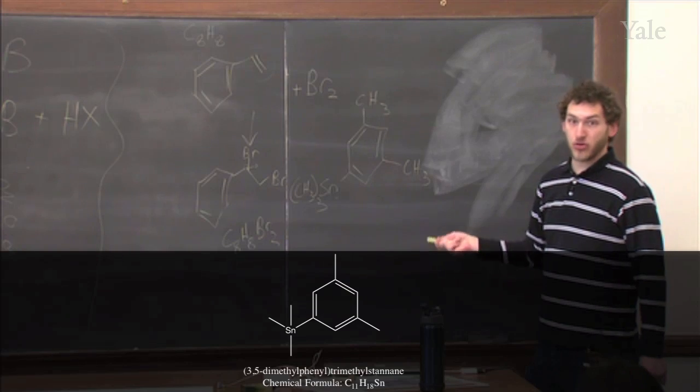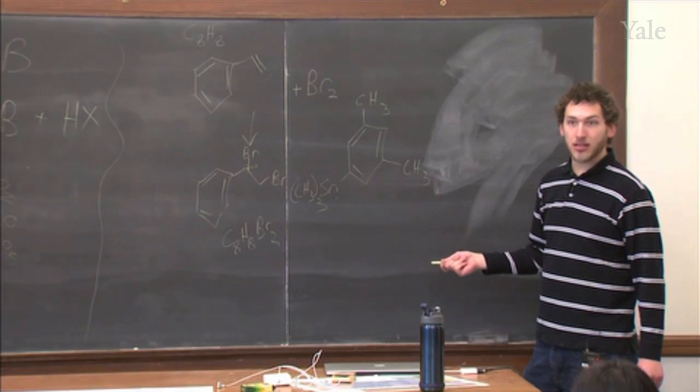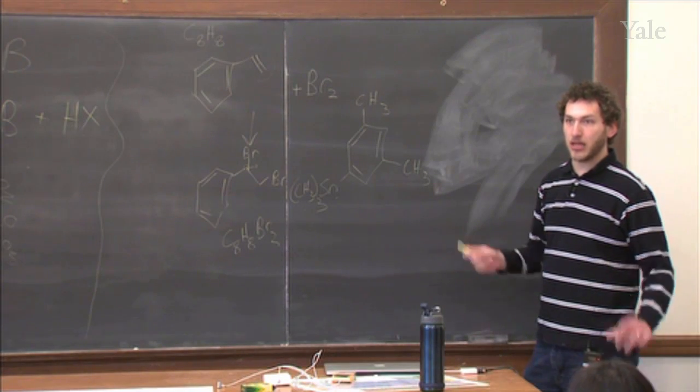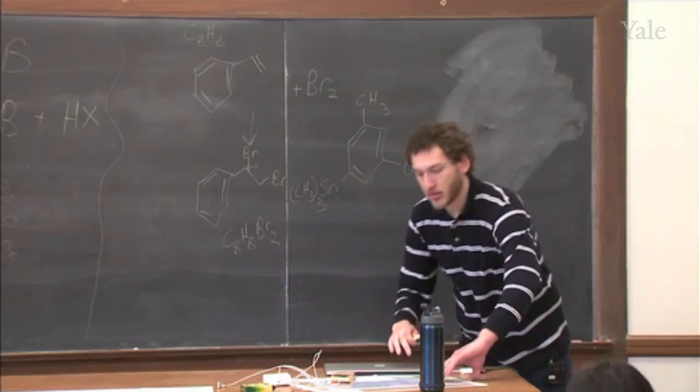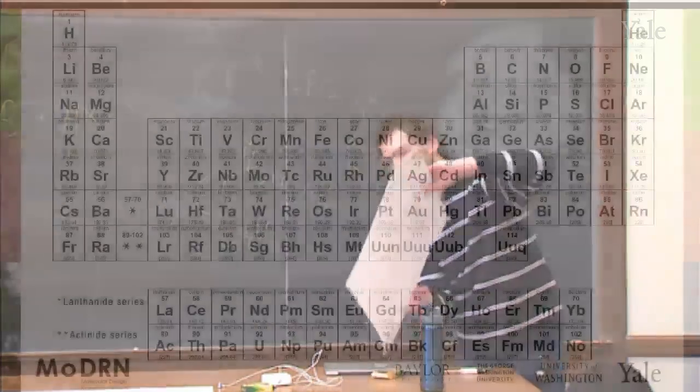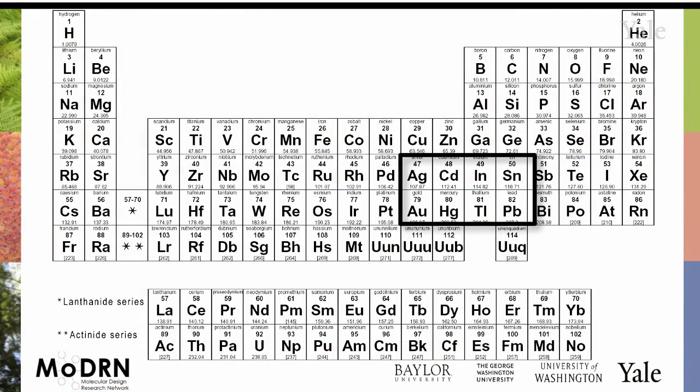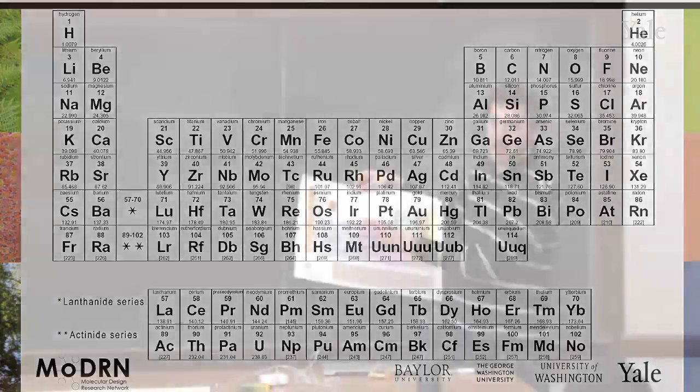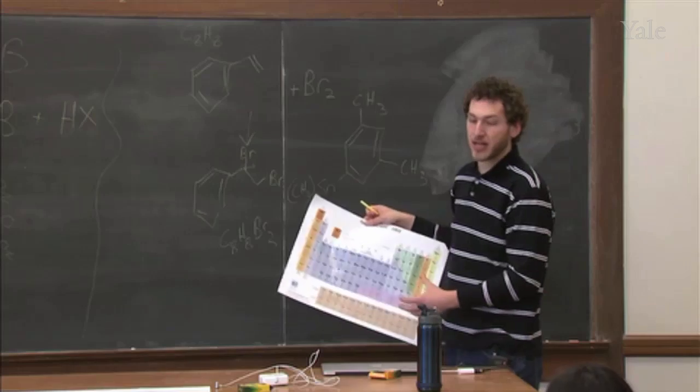Organotin compounds are extremely toxic, as are basically any, so if you look at the periodic table, these are the heavy metals. So organo-gold, mercury, thallium, lead, tin, indium, cadmium. And these compounds are all extremely toxic.